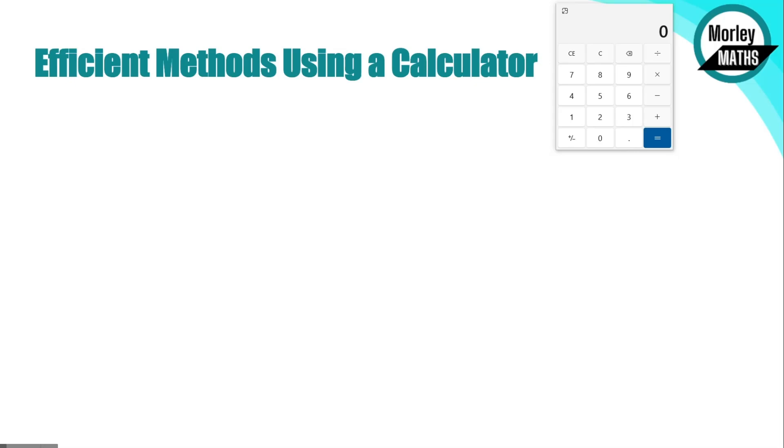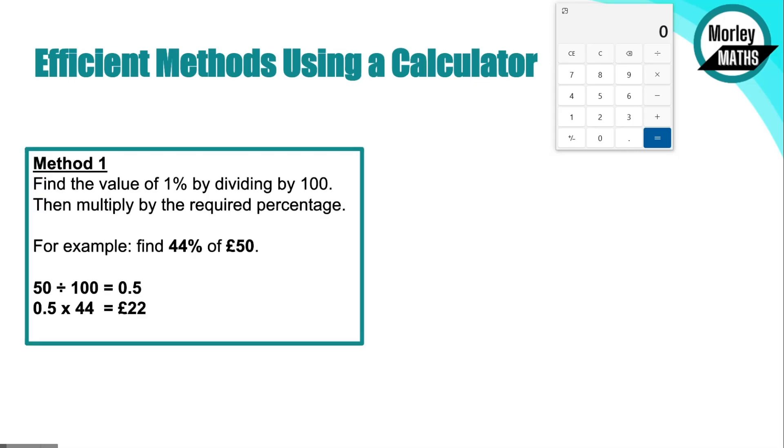The first method I always like to teach is to find 1% of our value. We're going to find 1% of our value and divide it by 100. Then we're going to multiply by the required percentage that we need. For example, if we need to find 44% of 50 pounds, we're going to divide 50 by 100. That will give us the value of 1%. Once you've got 1%, you can just times it by whatever percentage you need. You can see on the screen: 50 divided by 100 is 0.5, 0.5 times 44 is 22. So 44% of 50 pounds is 22 pounds.